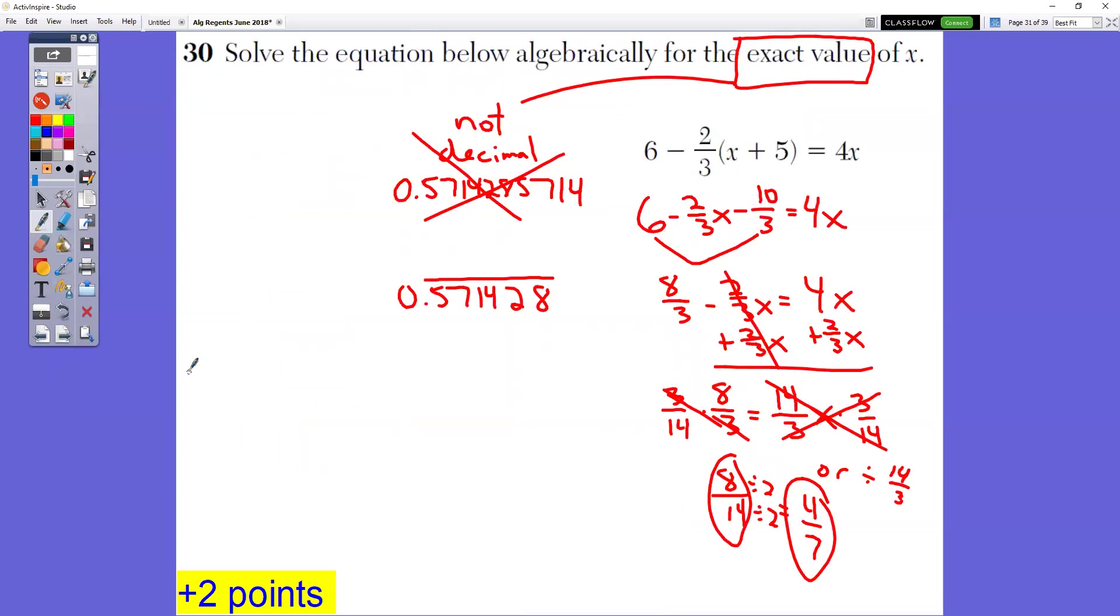In question number 30, solve the equation below algebraically for the exact value. You've got to be a little bit careful on this one. The first thing that we want to do is distribute negative two-thirds times x and negative two-thirds times five. I left it in the form of a fraction. You could change them to decimals, that's fine. We need to combine our like terms on this side. We have a plain number and a plain number. So adding together six and negative 10 thirds is eight thirds. Now we have eight thirds minus two-thirds x equals four x. Get all the letters on one side by adding two-thirds x. This is a fraction. I chose to multiply by the reciprocal. You could have changed them into decimals and just used the decimal form. So I chose to multiply by three fourteenths on both sides. You end up with eight fourteenths or four sevenths. Either of those two answers would be fine.